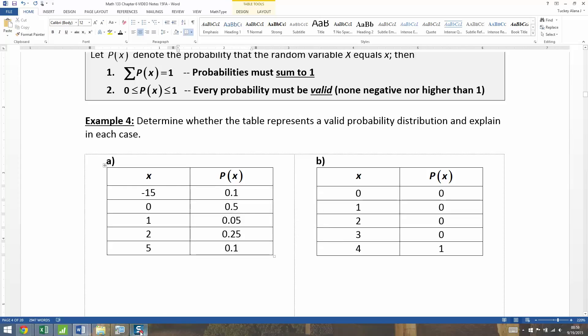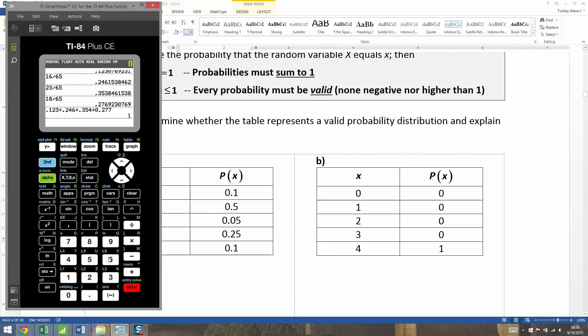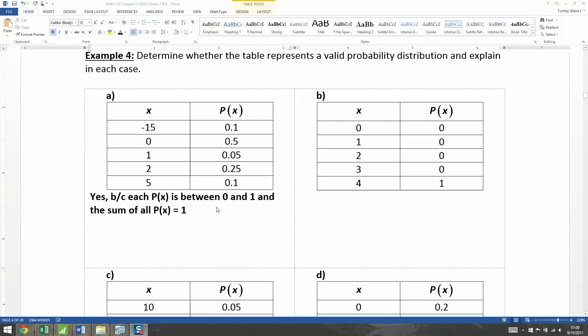And the next thing we need to do is we need to make sure that the sum of those probabilities is 1. So let's add them up. Yep, that makes 1. So this is a valid probability distribution. Each probability is between 0 and 1, and the sum of all the probabilities is equal to 1. Each P(x), each probability, is between 0 and 1, and the sum of all the probabilities is equal to 1.